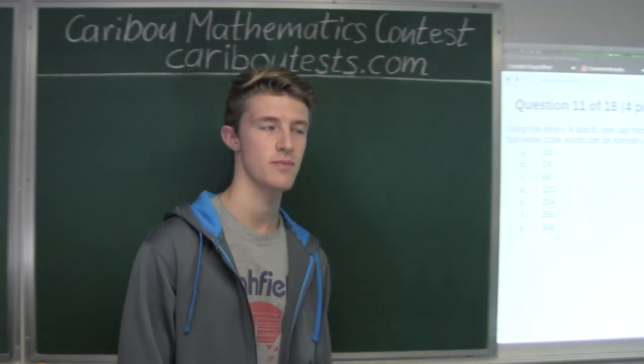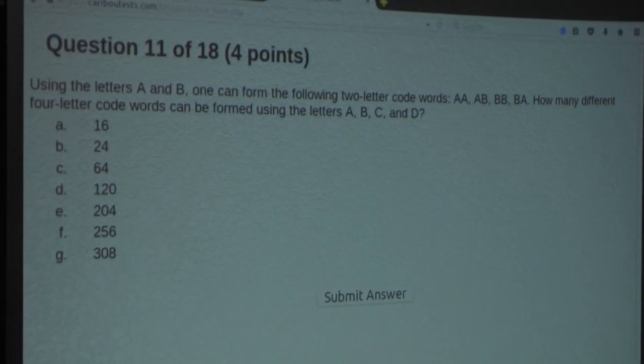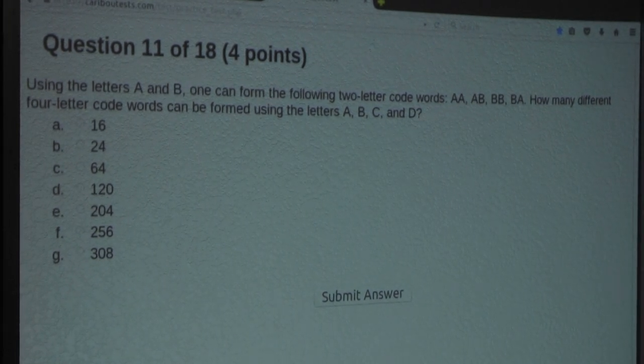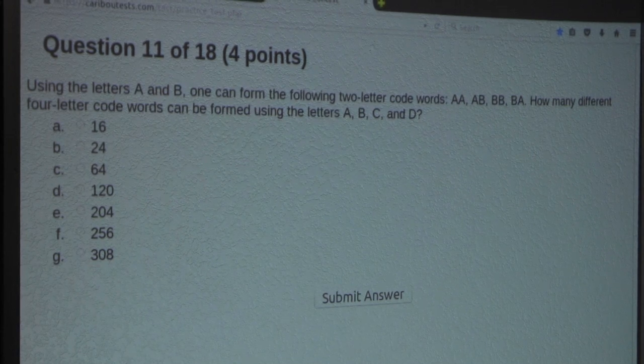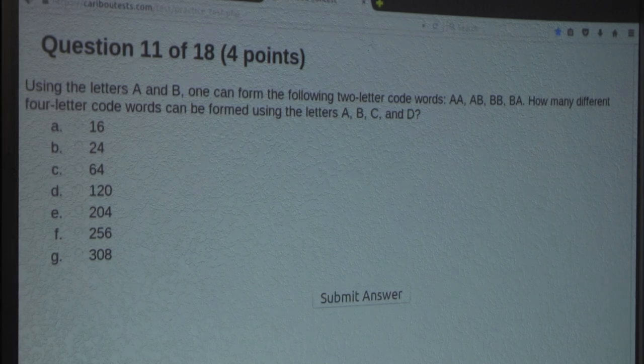So the question is: Using the letters A and B, one can form the following two letter code words: AA, AB, BB, and BA. How many different four letter code words can be formed using the letters A, B, C, and D?